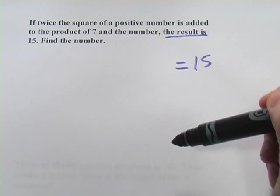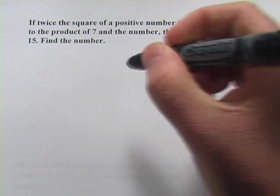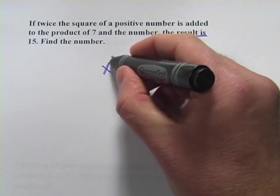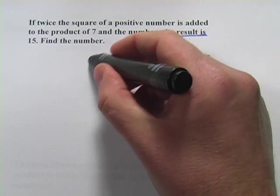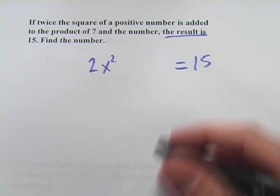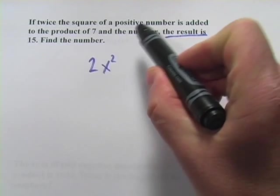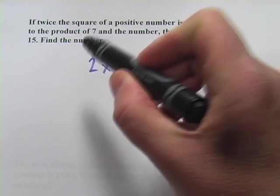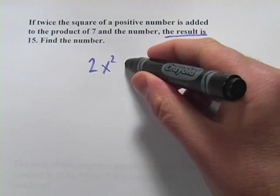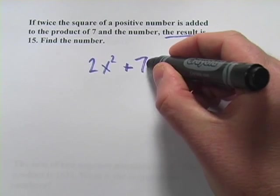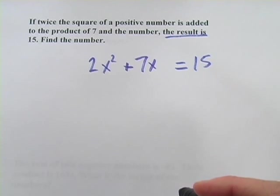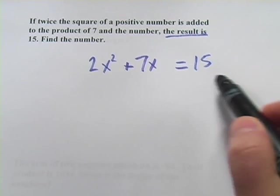Twice the square of a positive number. So we'll call that number x. The square of it is x squared, and twice the square of it is 2x squared. If that, twice the square of a positive number, is added to the product of 7 and the number, so plus the product of 7 and the number is 7 times x, the result is 15. So there we go. A lot of words for a pretty simple-looking quadratic.